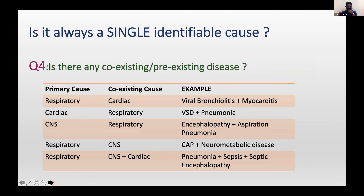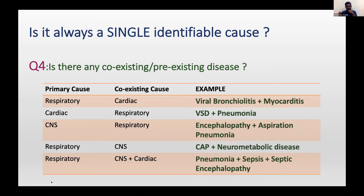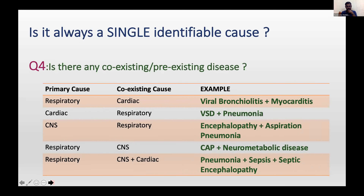The fourth question — after understanding whether it is mixed, primary airway, or primary parenchymal disease — is: are there any coexisting or preexisting diseases? Most of the time it need not be a single identifiable cause. For example, a child with viral bronchiolitis may also have myocarditis, typical in RSV infection. A child with a left-to-right shunt VSD may present with pneumonia. A child with encephalopathy may have aspiration pneumonia. These things are quite common and important for planning respiratory support therapy.